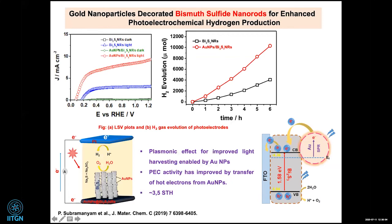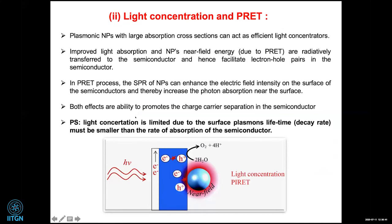The improved efficiency due to gold nanoparticles needs to be proved with lifetime measurements. Hot electron injection can take place as shown in these pictures, with typical conversion efficiencies of around 4–5%. In the PRET process, the surface plasmon resonance of the nanoparticles can enhance the electric field strength or intensity on the surface of the semiconductor. Both effects have the ability to promote charge separation. Once you create the charge separation, the easiest thing that can happen is recombination — your job is to ensure they don't recombine with each other.